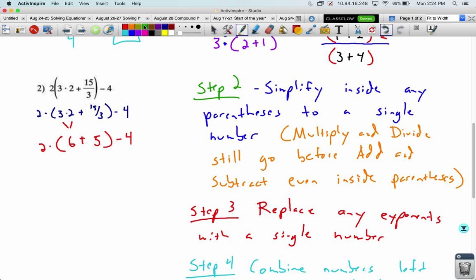All right parentheses still aren't gone I have to do the six plus the five so now I get two times six plus five is eleven, parentheses can go. Now I do the multiplication before the subtraction so two times eleven is twenty two minus four is eighteen. Circle your final answer.